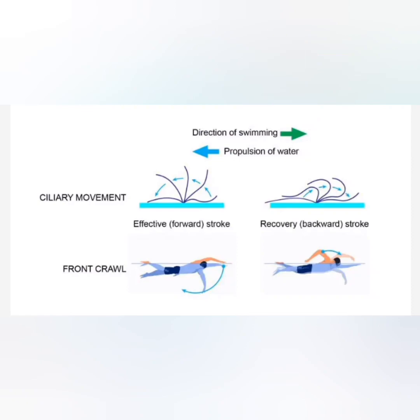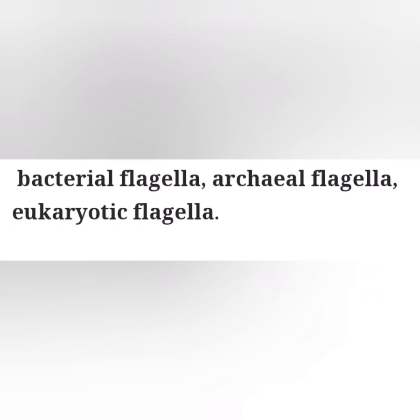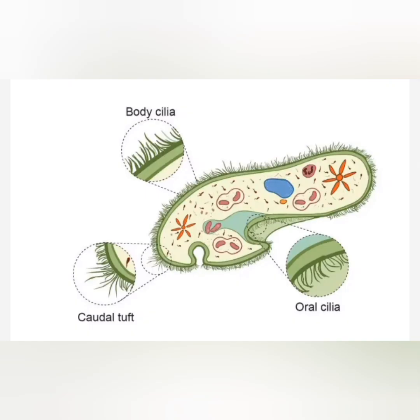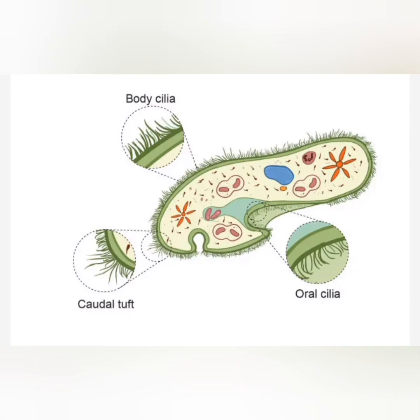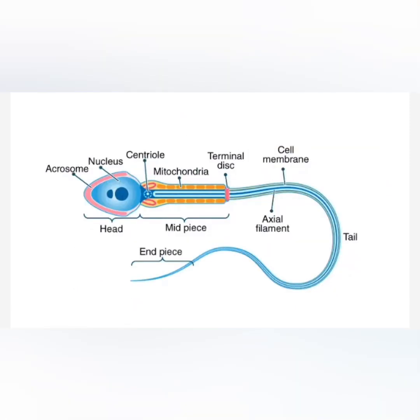Archaeal flagella are similar to bacterial flagella. The only difference is the central channel. Eukaryotic flagella are complex projections that beat from one place to another and return to the first location.